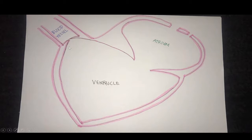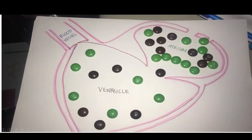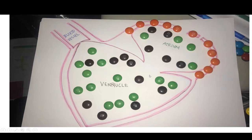Here we have a diagram of the heart showing the atrium, the ventricle, and the blood vessel. The valve between the atrium and ventricle is open, and blood — represented by these little M&Ms — flows down into the atrium and through to the ventricle.